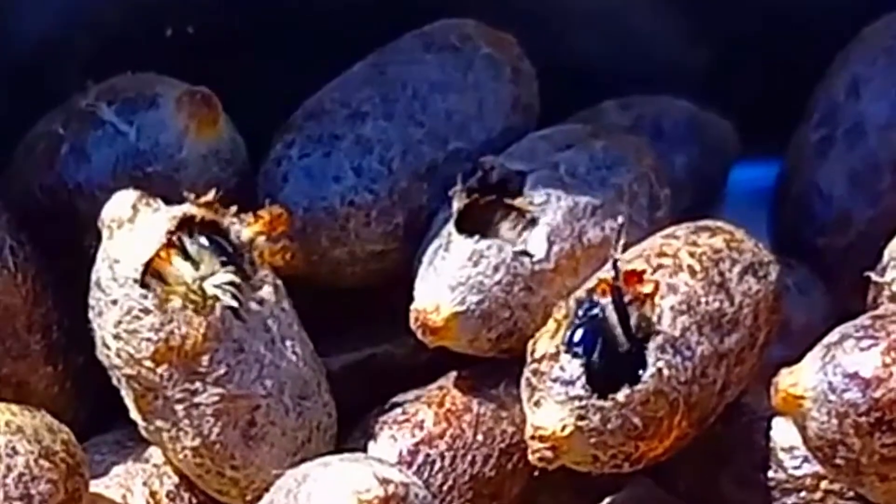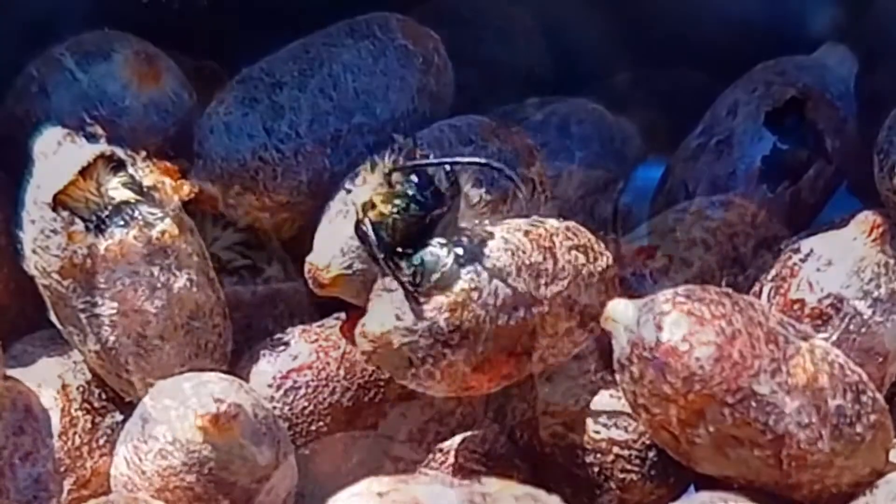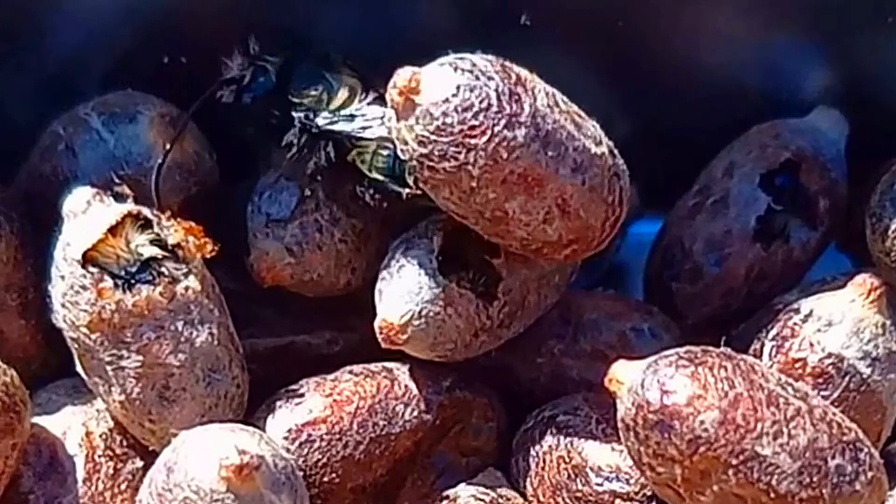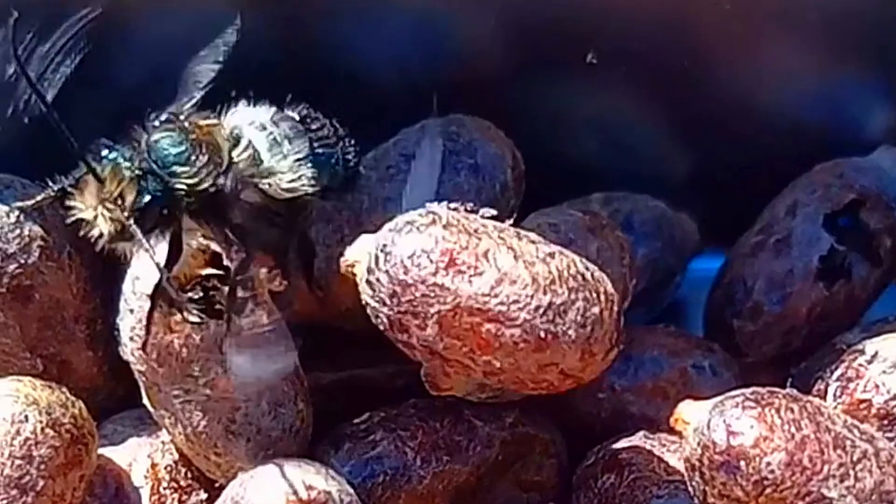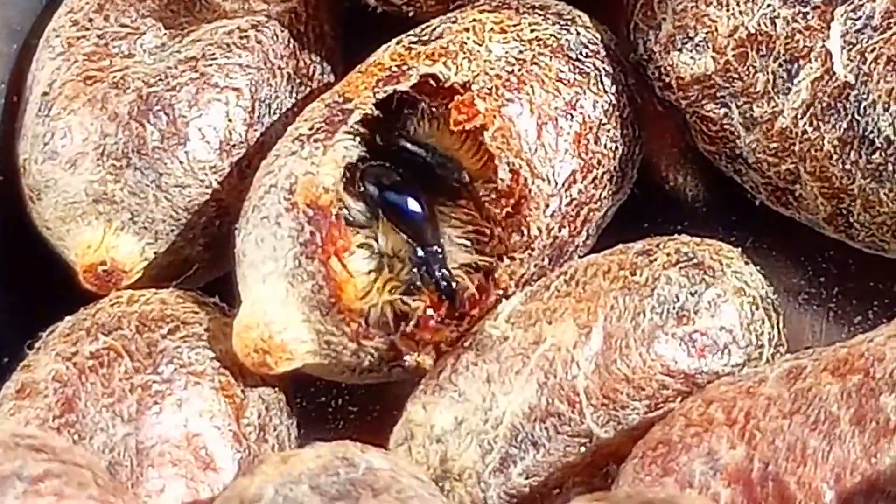For cocoons that have already been harvested, the bees only need to exit their cocoons. Once these males are free, they will clean themselves, head off to find some food, and then wait patiently for the females to appear. The male bees are very docile by nature.